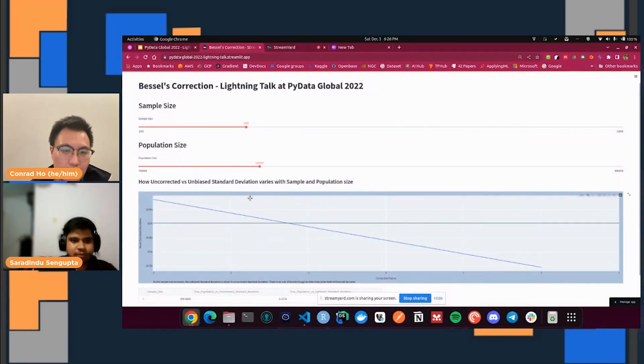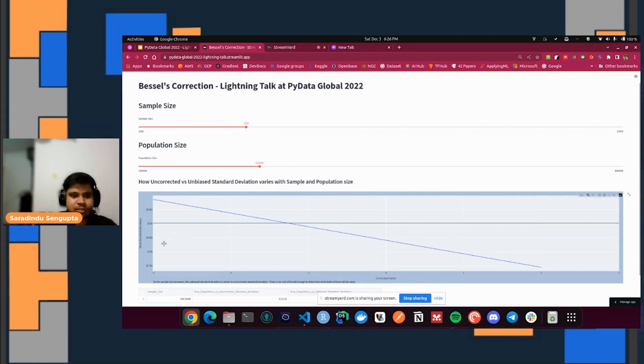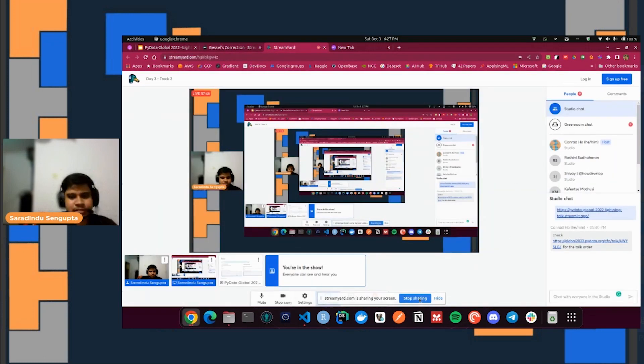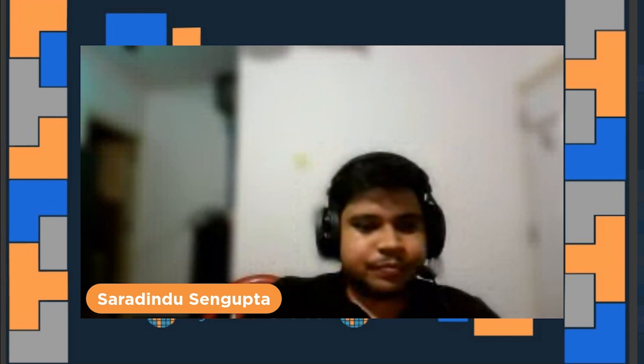If you just choose the sample size with the default values, you can see the correction factor would deviate very much. With sample size 300, the mean of the population and mean of the sample is quite different. If you increase the sample size all the way towards 1000, then you see the deviation factor where the mean of the population and mean of the sample is quite close to each other, and the subsequent sum of squared errors is reduced. In most cases when the sample size is lower, that is when the Bessel correction would come into picture.